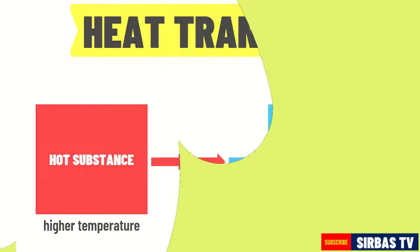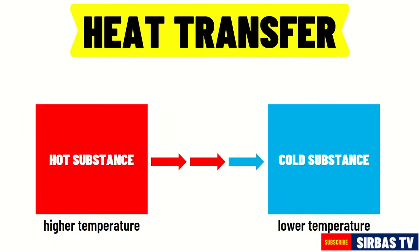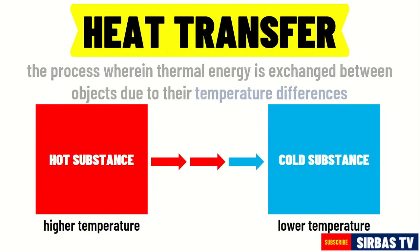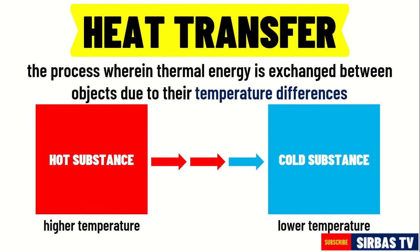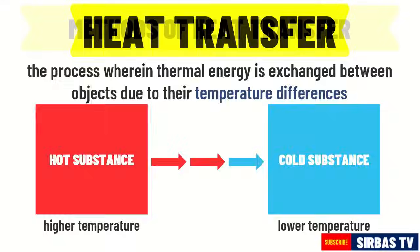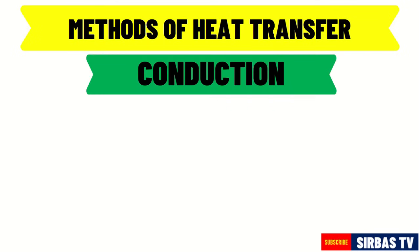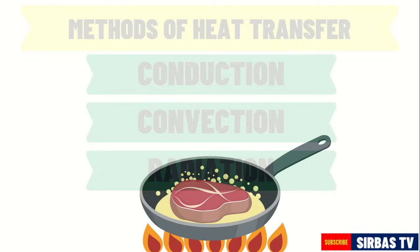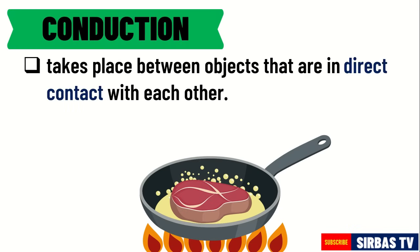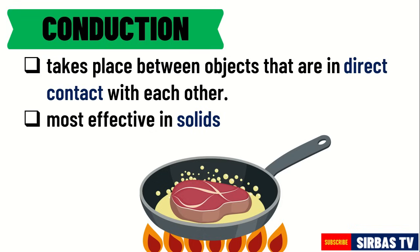Let us now discuss the different methods of heat transfer. Heat transfer is the process wherein thermal energy is exchanged between two objects due to their temperature differences. The three methods of heat transfer are conduction, convection, and radiation. Conduction takes place between objects that are in contact with each other, meaning heat energy is directly transferred through a material. This method of heat transfer is most effective in solids.